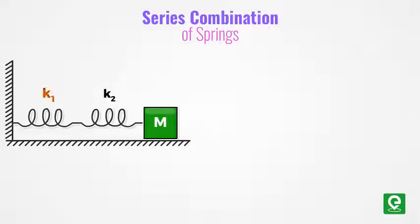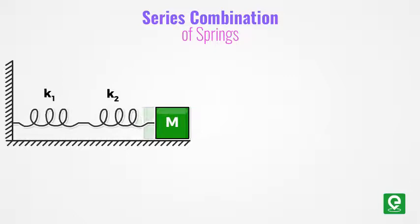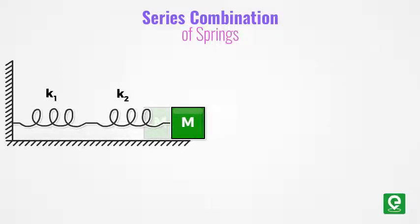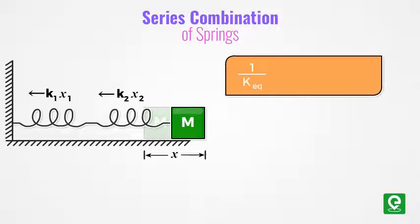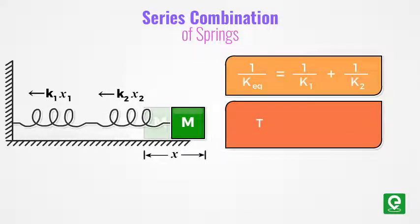Series combination of springs: when two springs of stiffness k1 and k2 are connected in series, the equivalent stiffness of the combination is given by the relation 1/k_equivalent = 1/k1 + 1/k2. And the time period of oscillation of the spring combination is equal to 2π times square root of mass divided by k_equivalent.